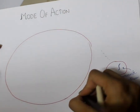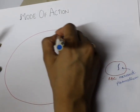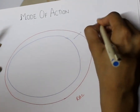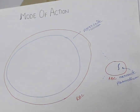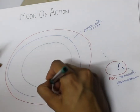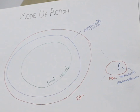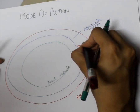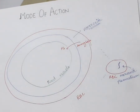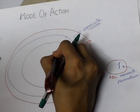Inside the RBC, the merozoite stage of plasmodium is present. Inside the merozoite there is a food vacuole. The role of the food vacuole is to digest — so the hemoglobin present in the RBC will be taken up by the food vacuole.